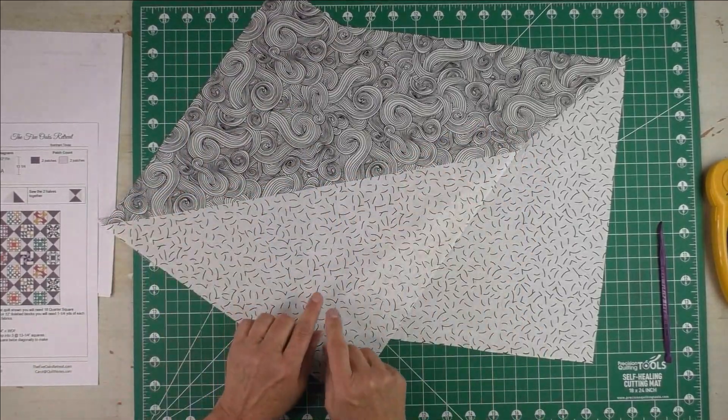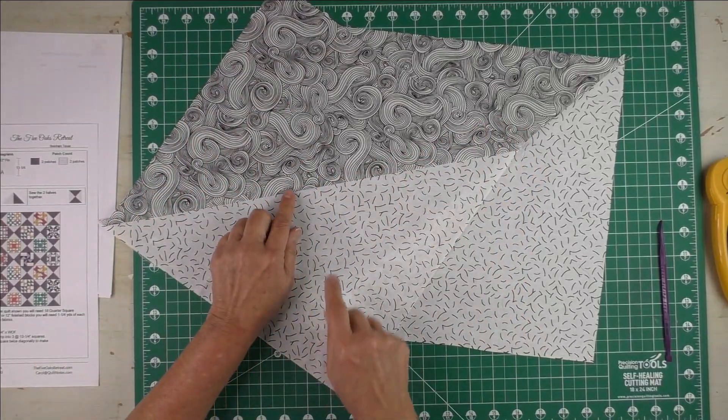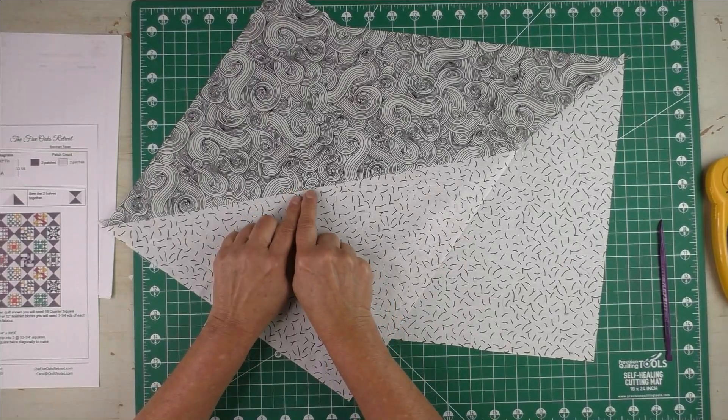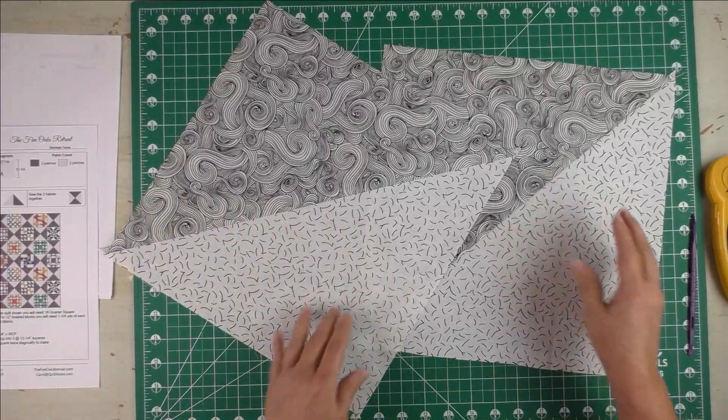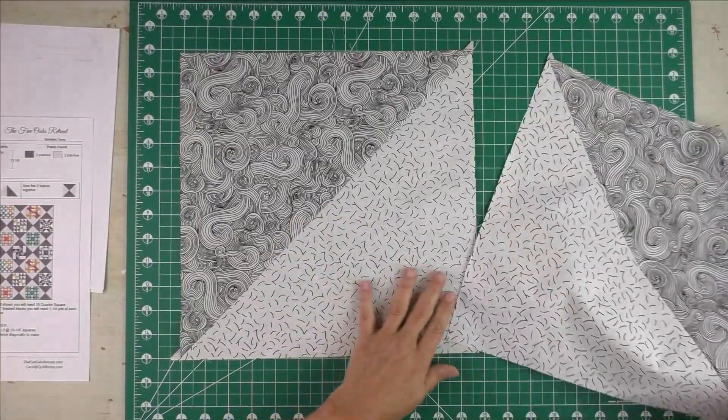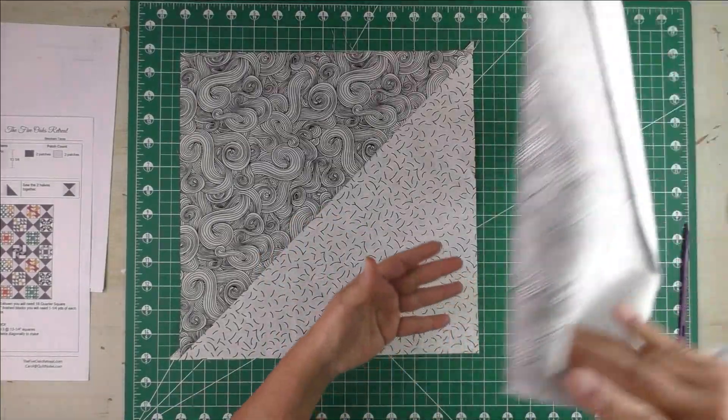Now I pressed. Normally I press all my seams open, but for this technique you'll get better results if you press towards one fabric. So I'm pressing toward the dark fabric on each of these.